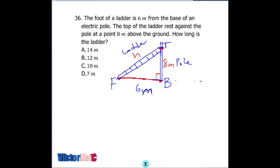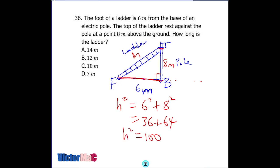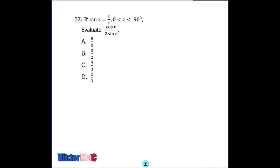The length of the ladder is the hypotenuse, so we apply Pythagoras' theorem. h squared equals six squared plus eight squared, which is 36 plus 64 equals 100. Taking the square root of both sides, h equals 10 meters. The answer is C.